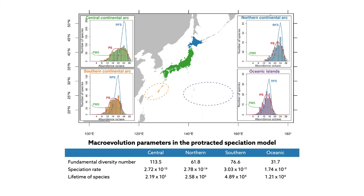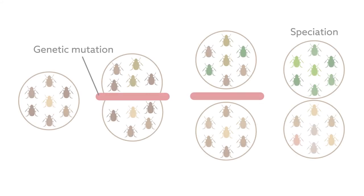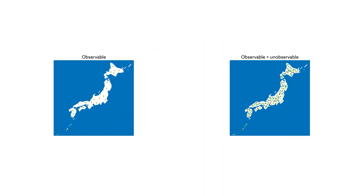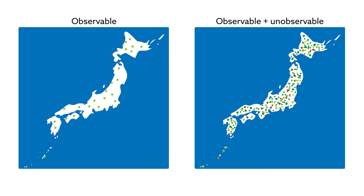In this analysis, they applied several different models, including one based on protracted speciation, where a new species arises less frequently over time. This model allows researchers to capture not only observable species but also unobservable species, a biological dark matter of sorts that, though invisible, still affects the dynamics of biodiversity.